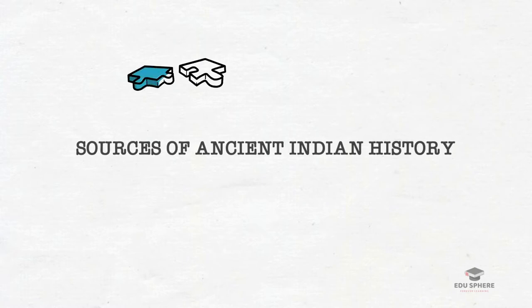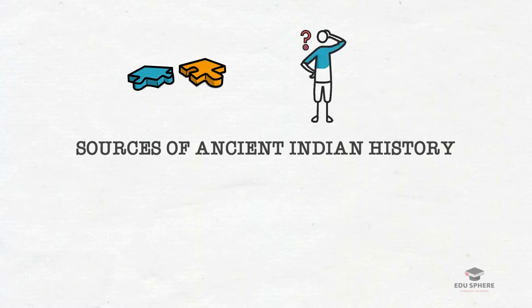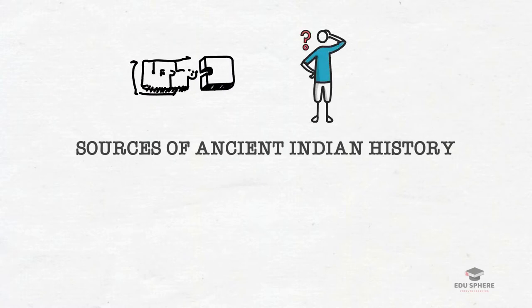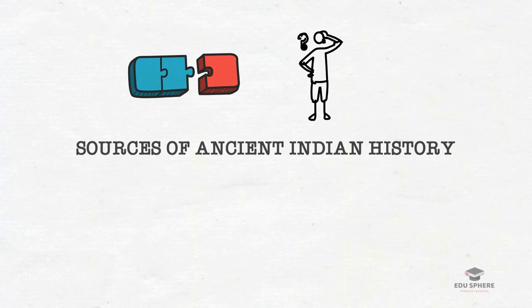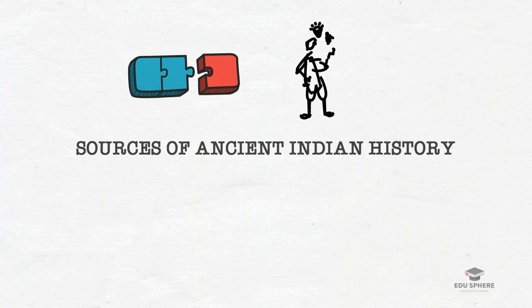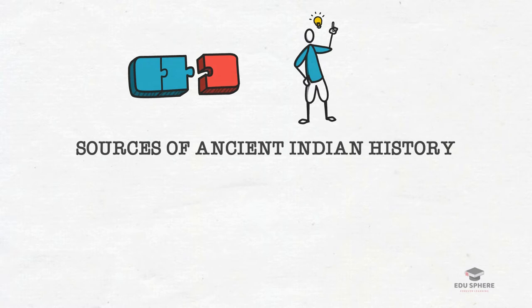When you learn a few scattered facts, it's hard to remember them. But when the facts are placed in the form of maps and stories by creating meaningful links, they are easy to remember. One thing connects to another and one thing calls up another. This is what we shall do in this history series.